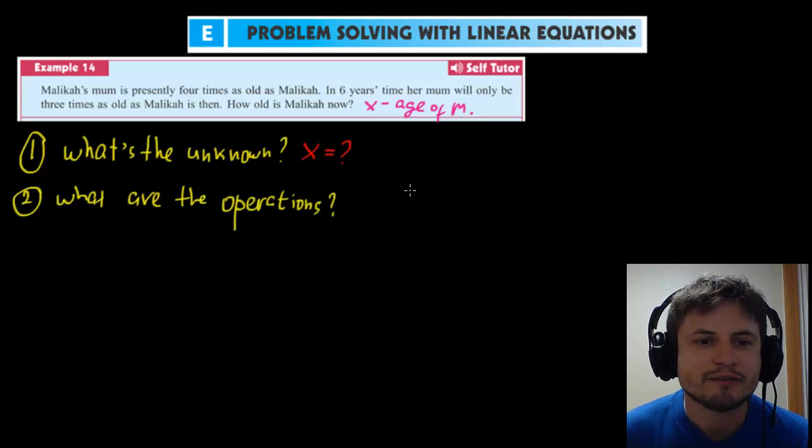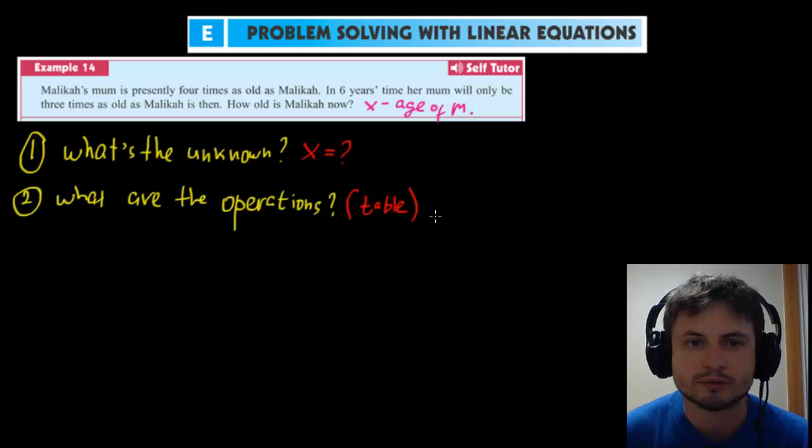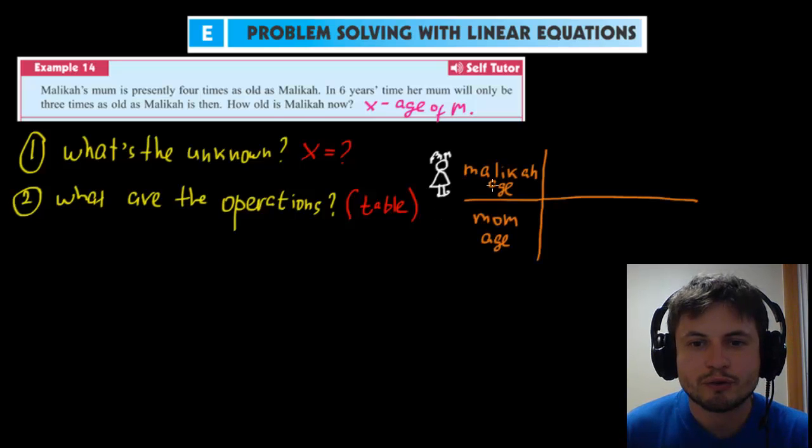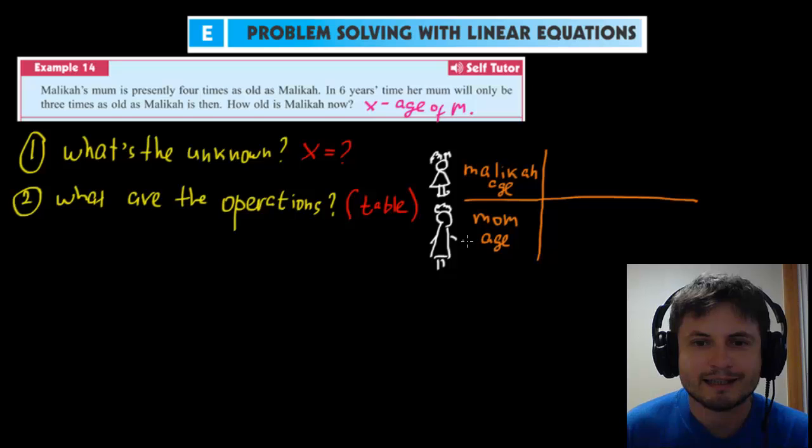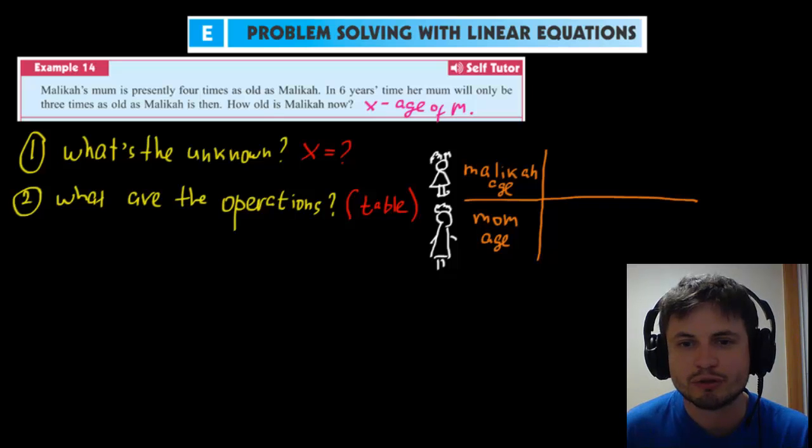Step number two is identify the operations. So what are the operations involved here? Specifically what are we doing? Are we multiplying? Are we adding? Are we subtracting? And here this is where I really like to make a table. So let's actually do this right now. Let's make a table. So we have two different unknowns here, basically two different numbers that we have to deal with. One of them is Malika's age and then her mom's age. So what are we dealing with here? We have two different ages.